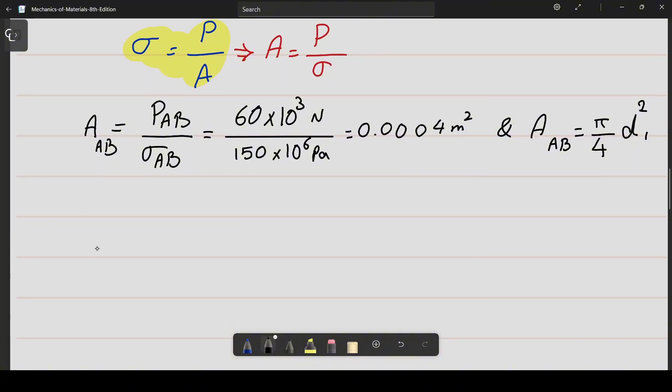That gives us diameter squared equals 4 times area divided by π. It's equal to 4 times 0.0004 divided by π.